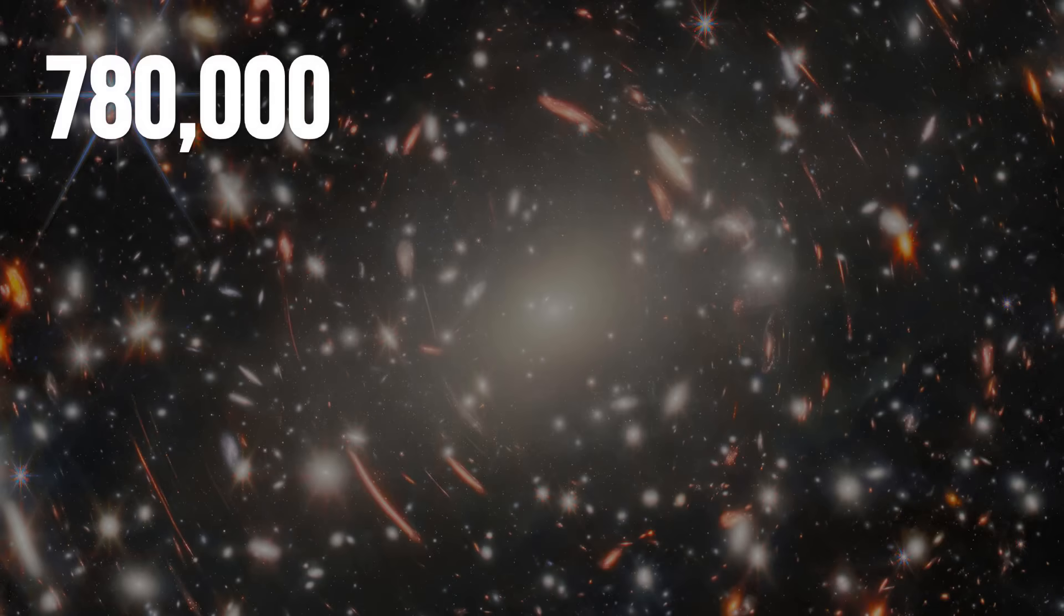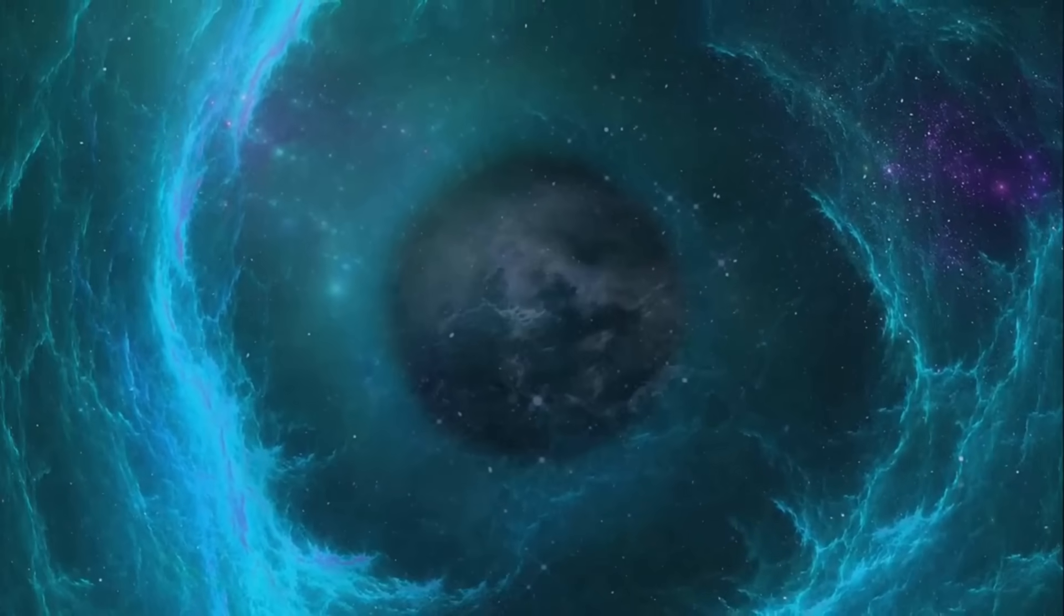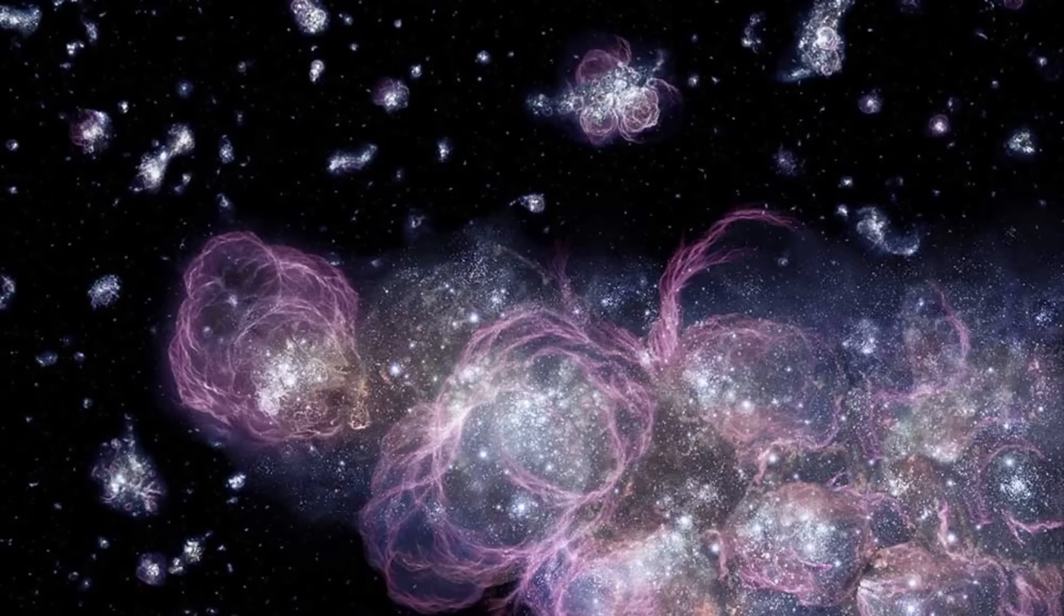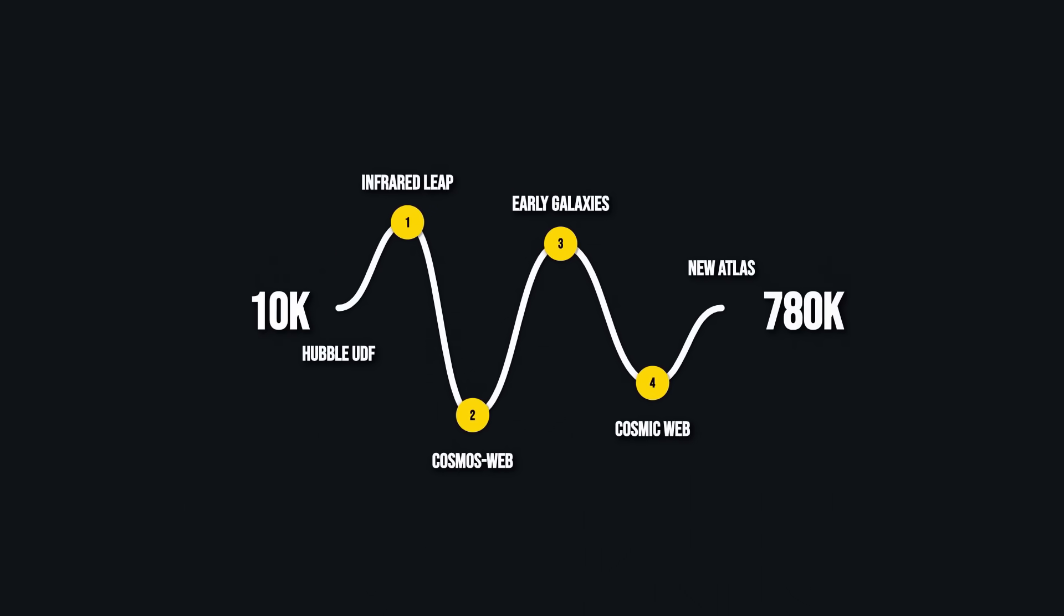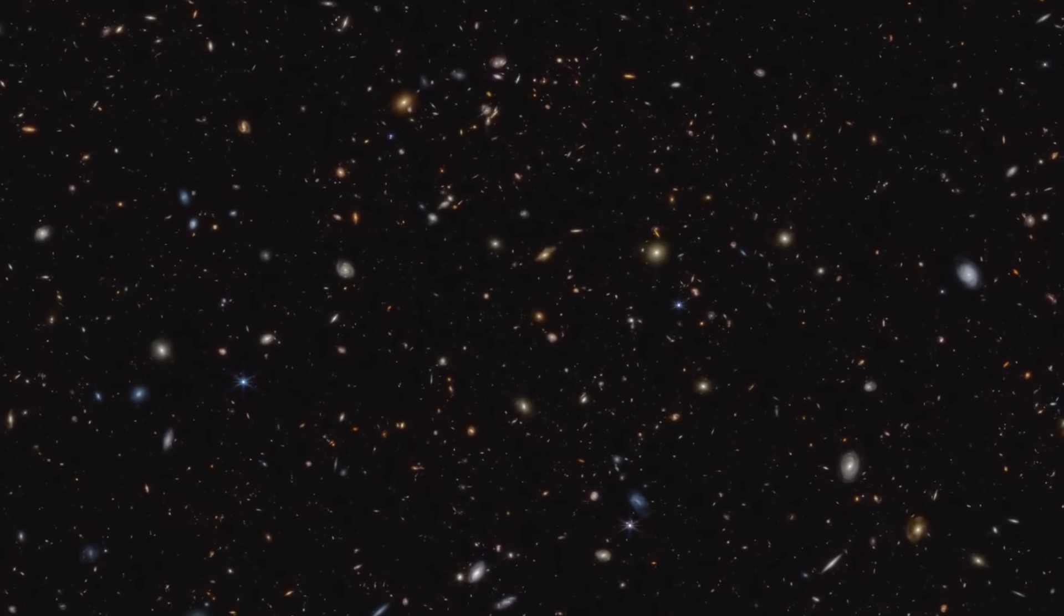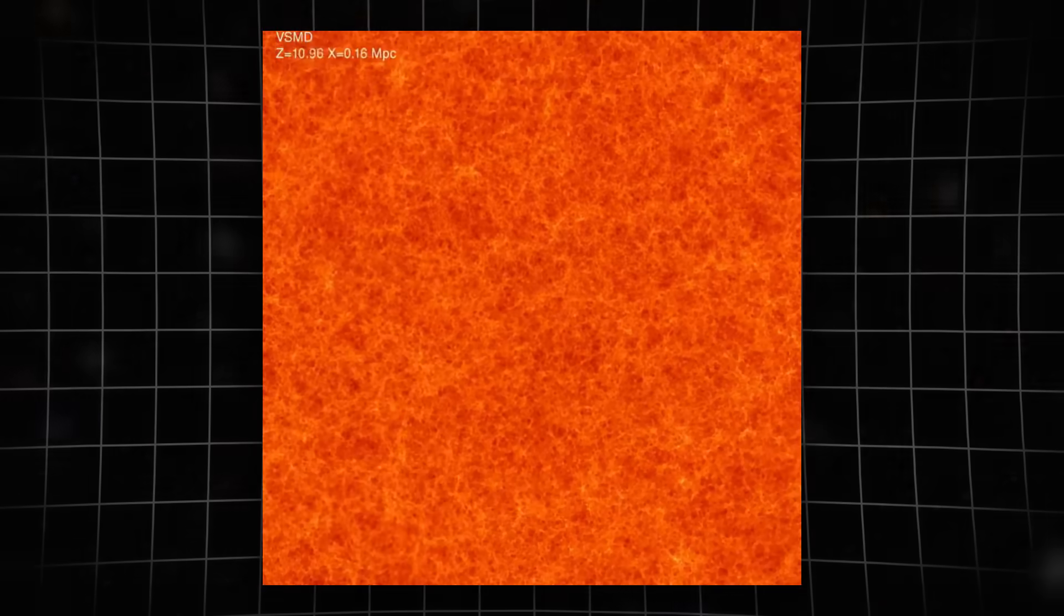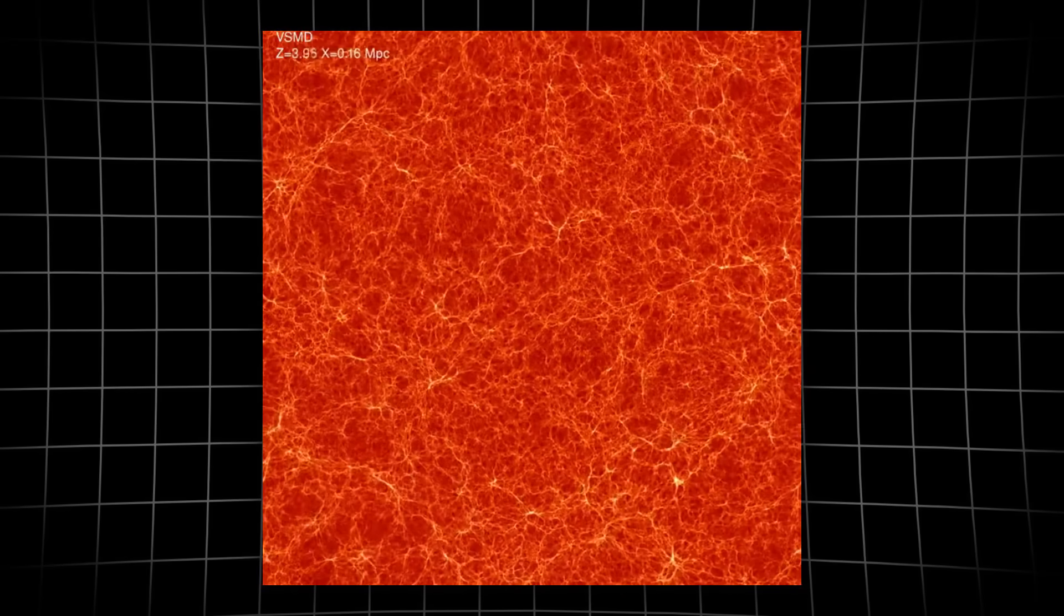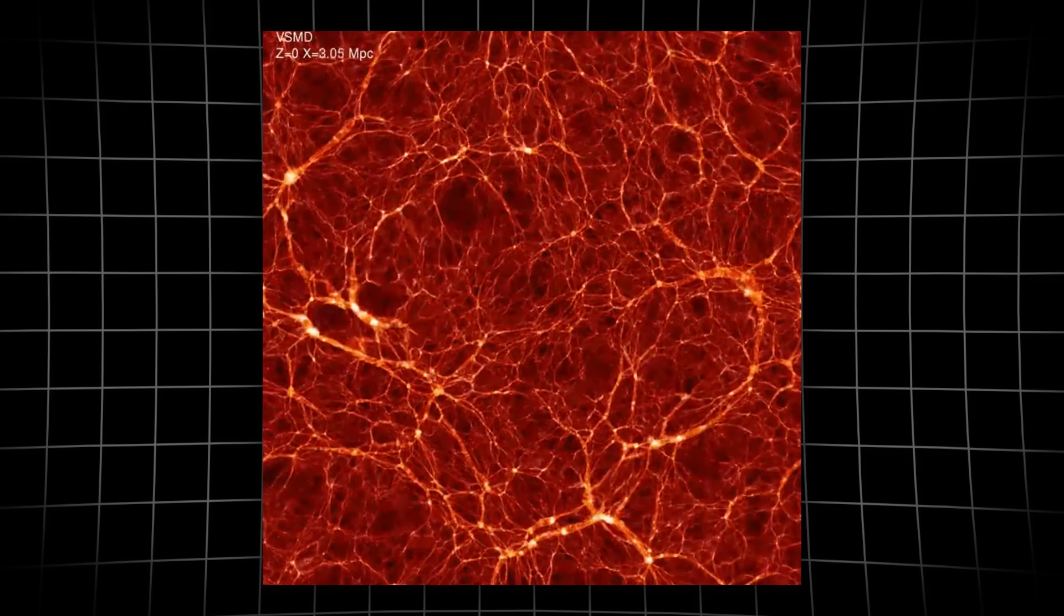Within this single field, astronomers cataloged nearly 780,000 galaxies, each a city of stars, some shining from less than 400 million years after the Big Bang. This isn't just a bigger picture, it's a new kind of atlas. The map is deep enough to reveal the universe's faintest, oldest structures, and wide enough to capture the grand architecture of cosmic filaments, clusters, and vast voids.